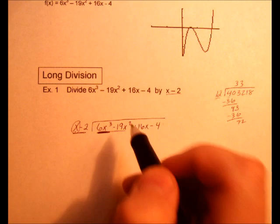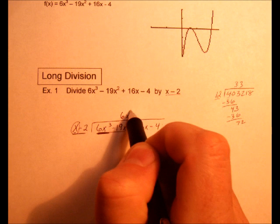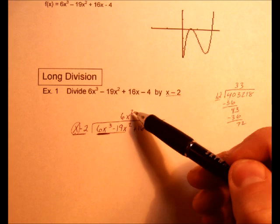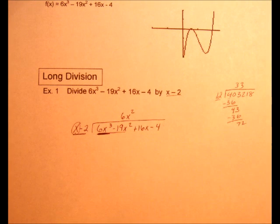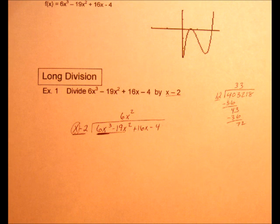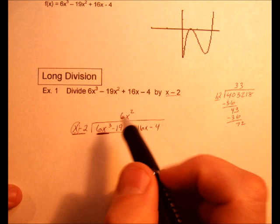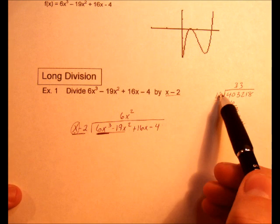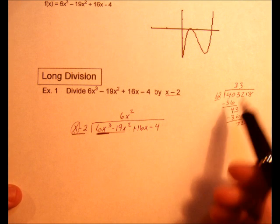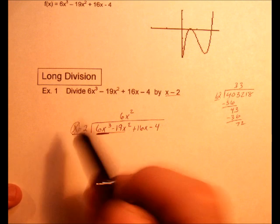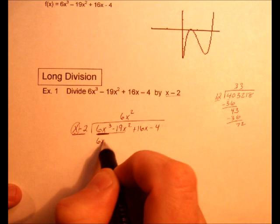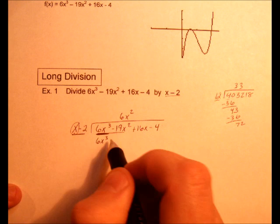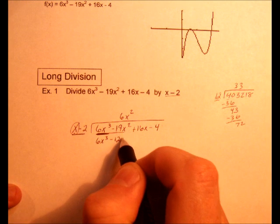These two terms have to go into two terms. So the easiest thing to do is start with the first term. x times what is 6x³? So that would be 6x². So I'm going to make sure that goes above the x² term, so our terms are all in the same columns. It's important to keep the line alignment.